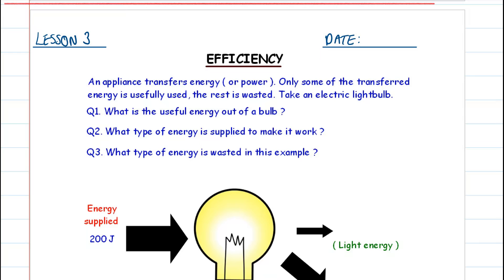Efficiency is a concept where we look at the amount of energy that's transferred to useful energy from the energy that's put into a system or device. This fits into what we've learned previously about how we produce electricity in coal-fired power stations and nuclear power stations. We're going to see how we can compare different ways of generating electricity using this concept of efficiency.